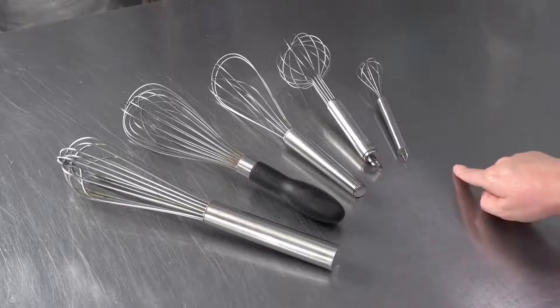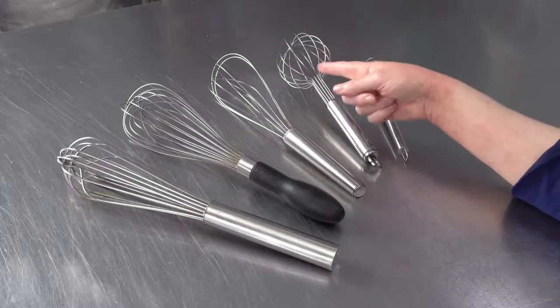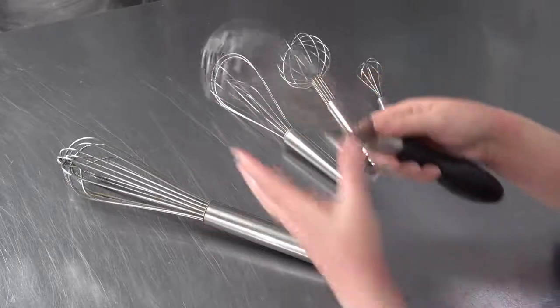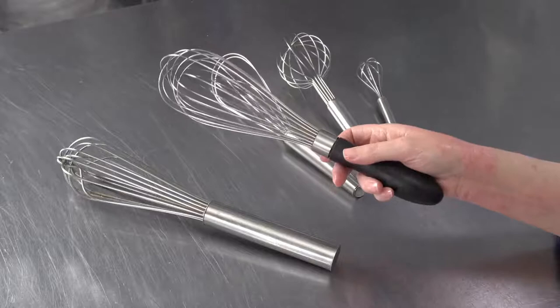Typically, we use a variety of what are called balloon whisks. They have a nice rounded shape at the end, whether that's an actual sphere or if it just tapers out gently into this nice round balloon shape at the end. That's in general what we're using.